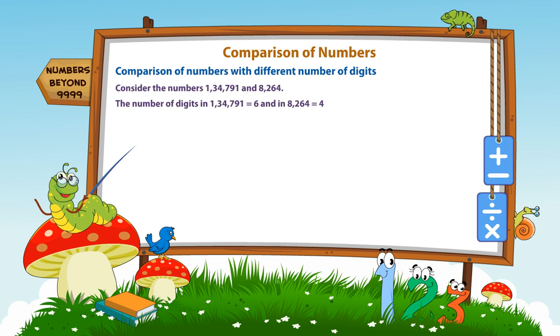The number of digits in 1,34,791 is equal to 6 and in 8,264 is equal to 4. Since 6 is greater than 4, therefore, 1,34,791 is greater than 8,264.